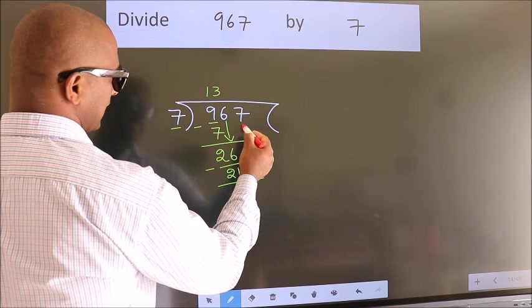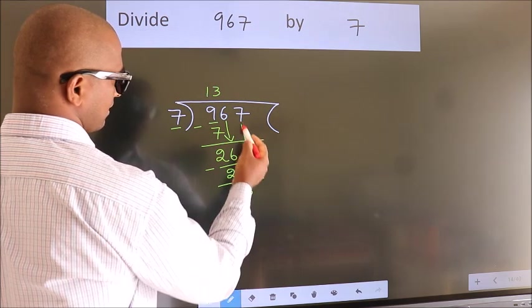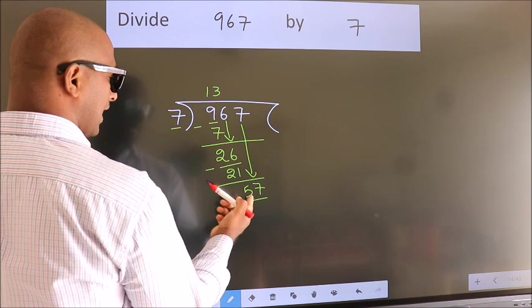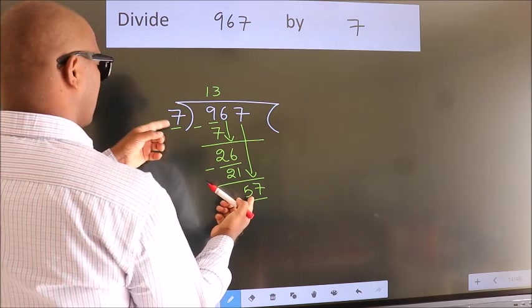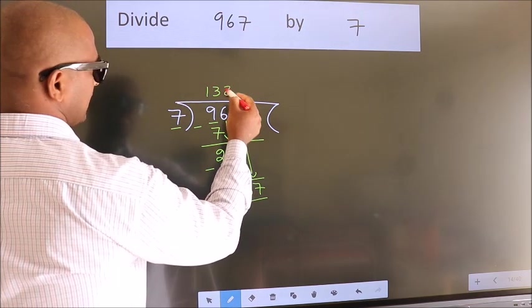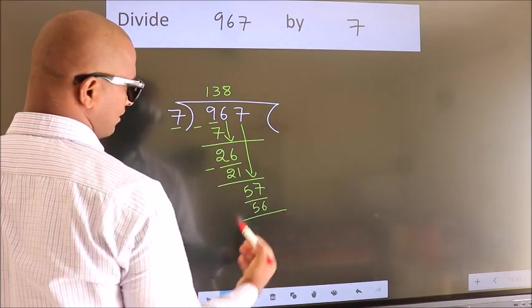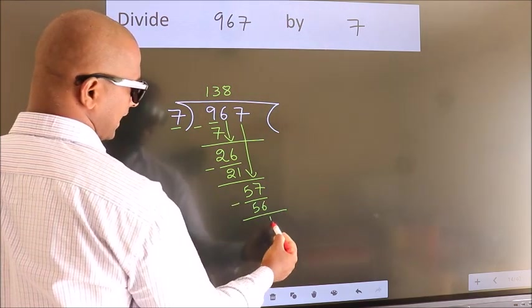After this, bring down the next number. So, 7 down, giving us 57. A number close to 57 in the 7 table is 7 eights, which is 56. Now we subtract. We get 1.